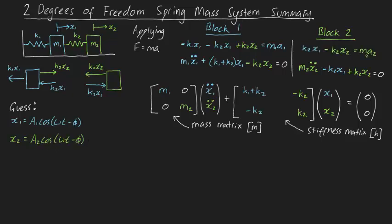Now by differentiating both of these things twice, we get x1 double dot equals minus ω² a1 cos(ωt - φ), and x2 double dot equals minus ω² a2 cos(ωt - φ). Substituting these values into our matrix equation and dividing by the cosine term, we get this.